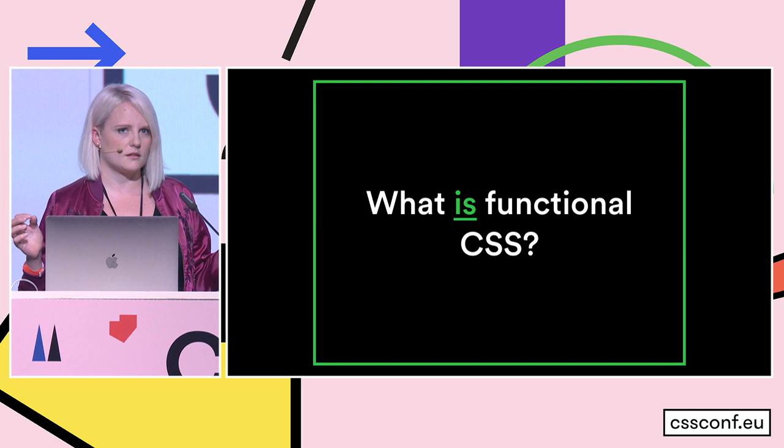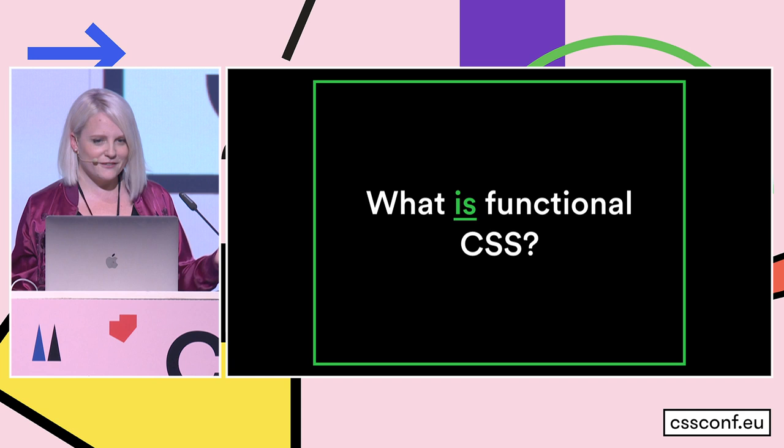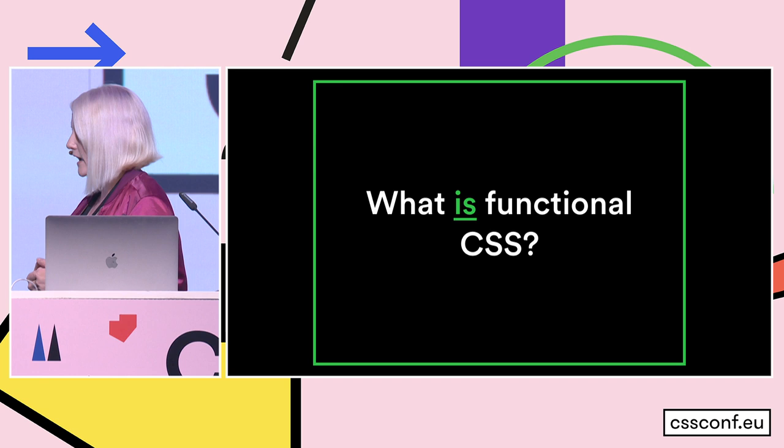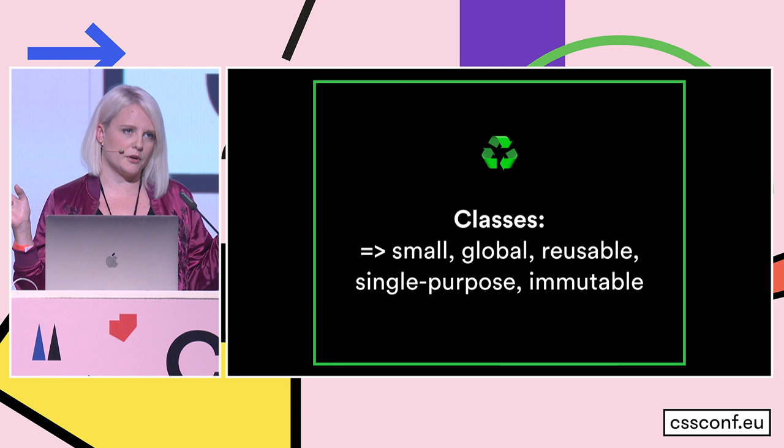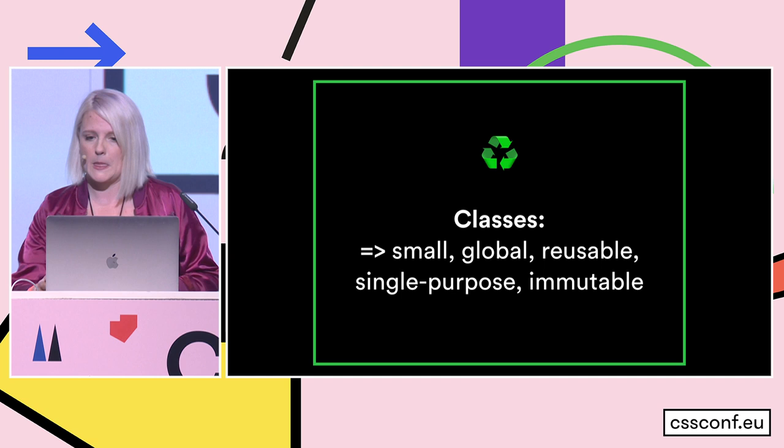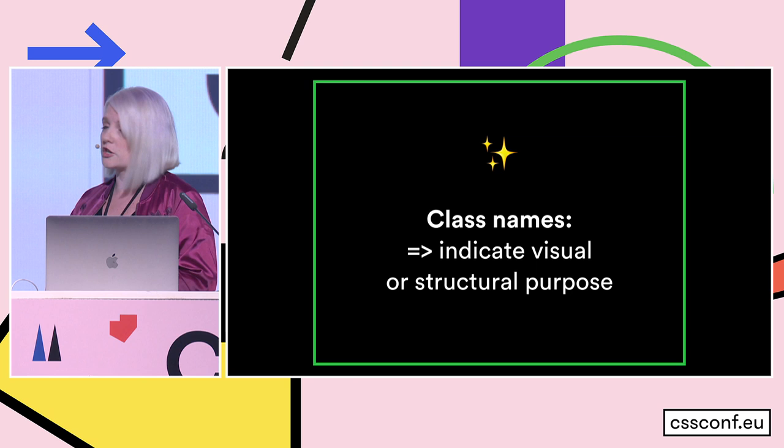So what is functional CSS? Just to get a lay of the land, who here has worked with functional CSS? Okay, that's like maybe 10%. So you all are going to benefit from this talk. Essentially it's just a CSS paradigm, a way to handle your classes. The classes themselves should be small, global, reusable, single purpose, and immutable — which I'll put in quotes because it's not that you can't change them, but the idea is that you don't. And the class names themselves should indicate their visual or structural purpose.